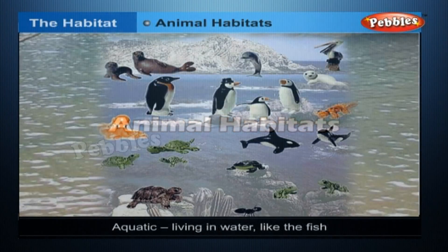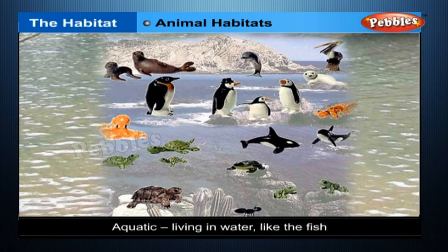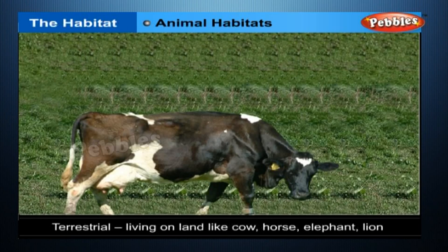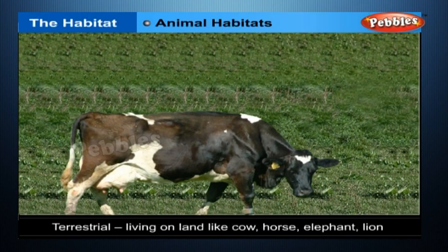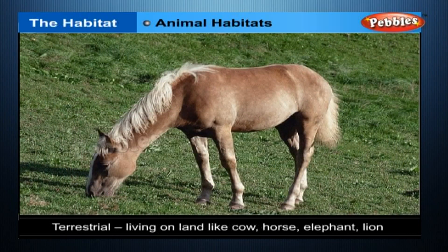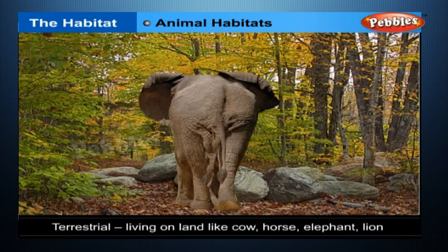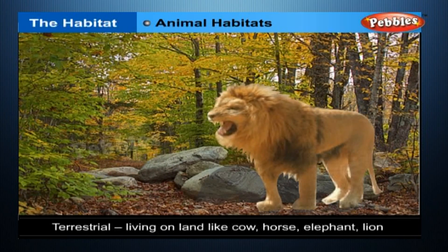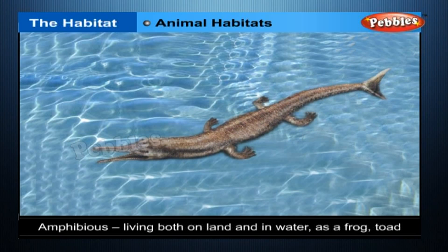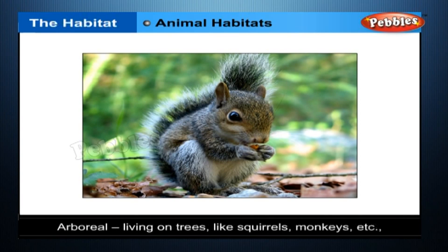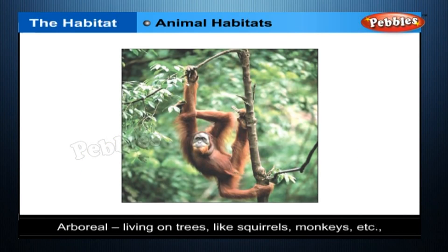Animal habitats: Aquatic — living in water, like fish. Terrestrial — living on land, like cow, horse, elephant, and lion. Amphibious — living both on land and in water, like frog and toad. Arboreal — living on trees, like squirrels, monkeys, etc.